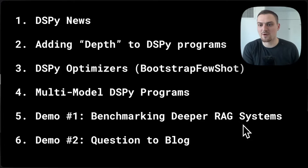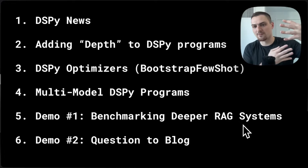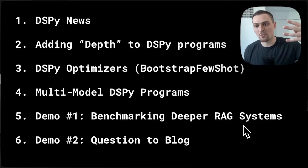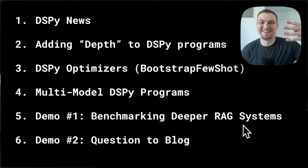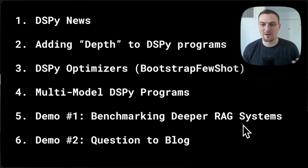Say you have four examples from eight traces and you're using four examples in the prompt — what are the optimal four? That's where you use random search or Bayesian optimization with Optuna to find those perfect four.